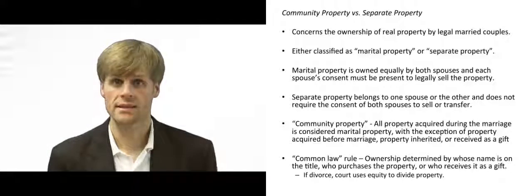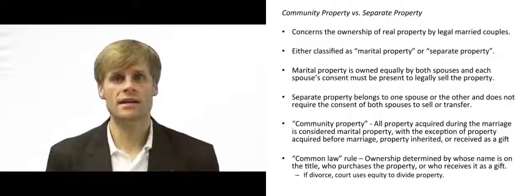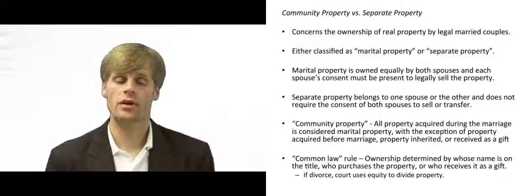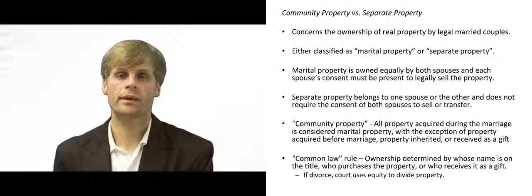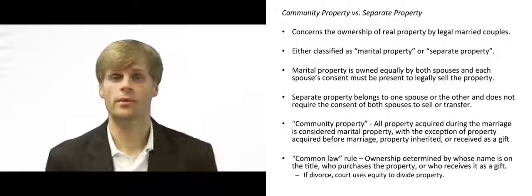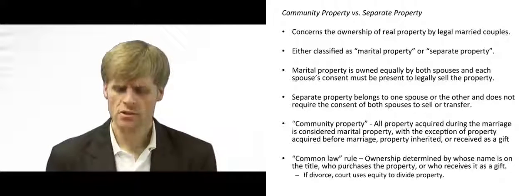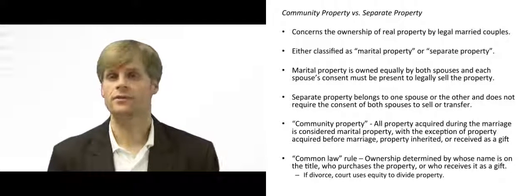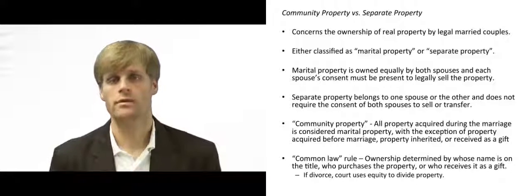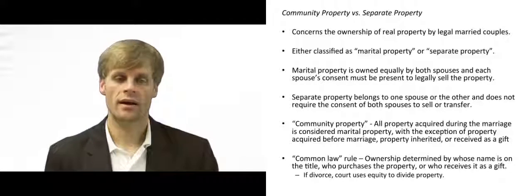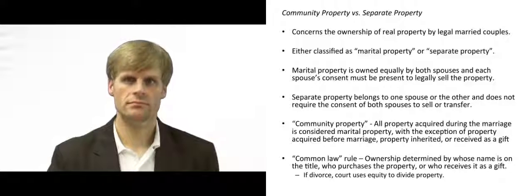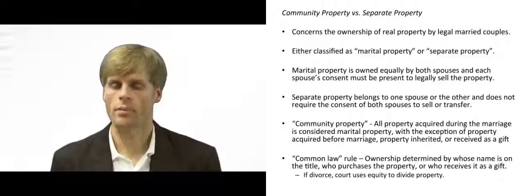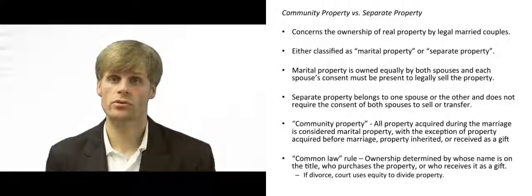In common law states, property generally belongs to the individual who holds title to it. Whoever's name is on the property, it's theirs, and that individual can sell or transfer the property at will. So if one party earns all the money and has all the money in a bank account — if both names are on the account, it's 50-50; if one name is on the account, that party controls it. This can seem largely unfair if one spouse stays home while the other works and puts their name on property because they have a higher credit score or something like that.